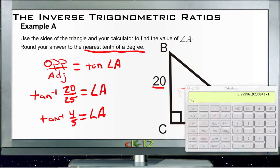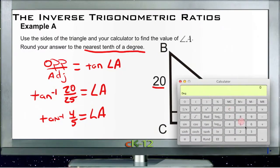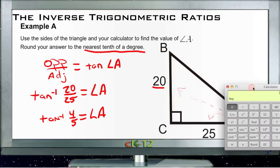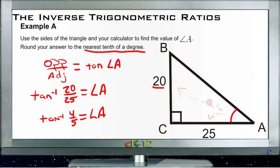Now we bring out our calculator. We have 4 divided by 5, so 0.8, and then we multiply that by second function inverse tangent, which tells us the degree measure is 38.659. We're rounding to the nearest tenth, so we get 38.7 degrees. Angle A is 38.7 degrees.